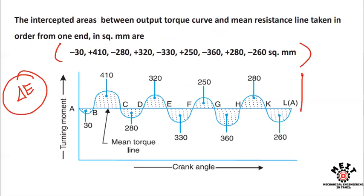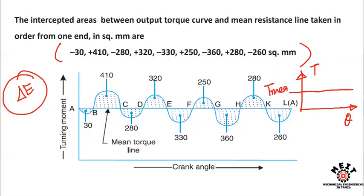In the turning moment diagram, the y-axis is torque and the x-axis is theta. The mean torque line is drawn. The intercepted areas relative to the mean line include minus 30 and plus 410 square millimeters. Areas above the mean line are positive and those below are negative.